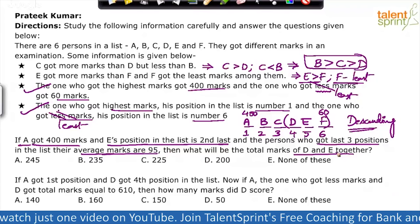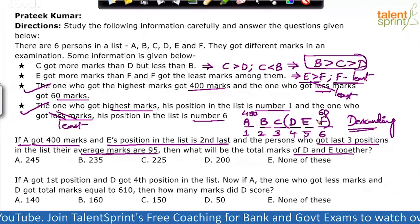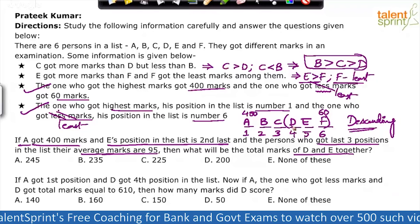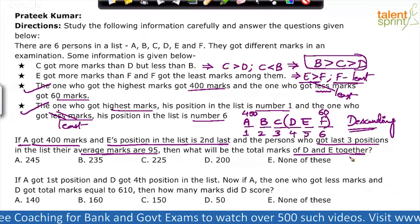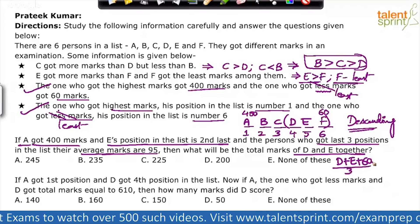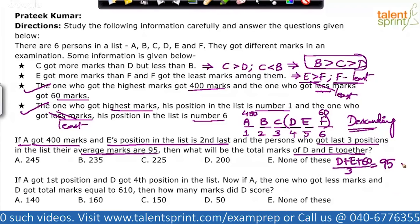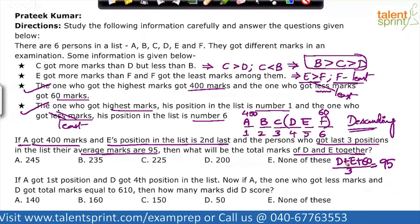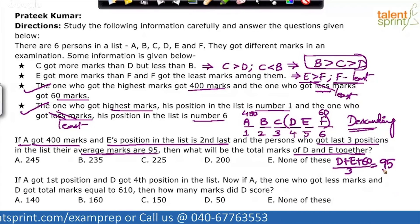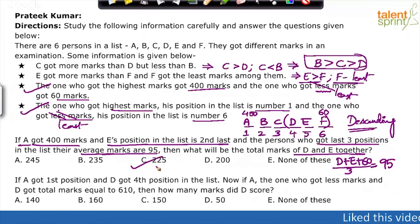The arrangement is A, B, C, D, E, F. The last three positions are D, E, F with an average of 95. F scored 60 marks. So: (D + E + F) / 3 = 95, meaning D + E + F = 285. Therefore D + E = 285 − 60 = 225. The total marks of D and E together is 225, which is option C.